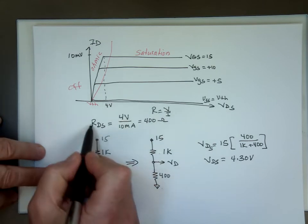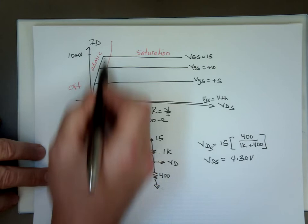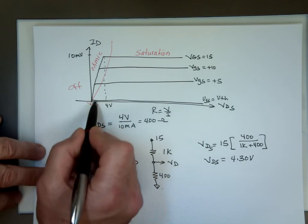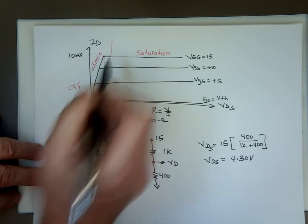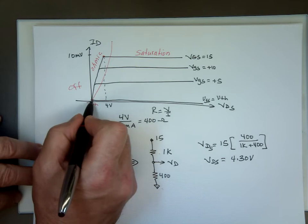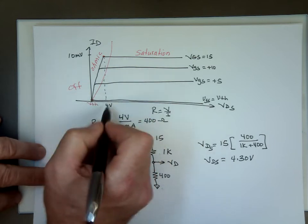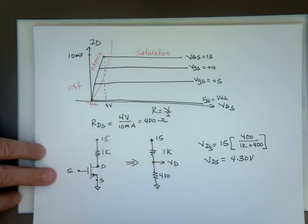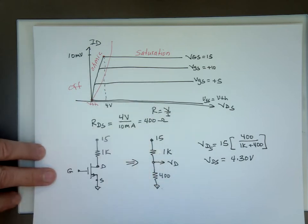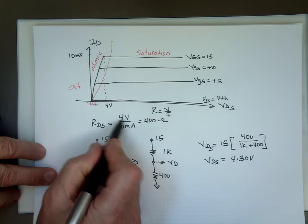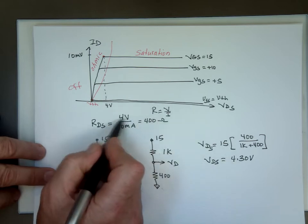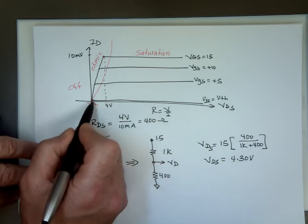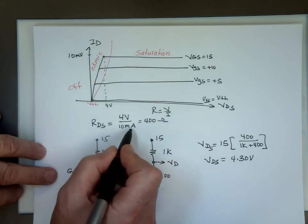So Ohm's law says R equals V divided by I. When we say R, we're talking about R between D and S. So if you take these two points, there's one point here, that's this one, and there's the other point, that's zero, zero. And this is 10 milliamp, and that's 4 volts. So the change in the voltage from here to there, that's 4 volts. Ohm's law says V on the top, that's the voltage on the top. The change in current from 0 to 10, that's 10 milliamp.